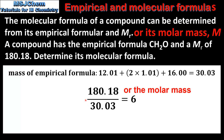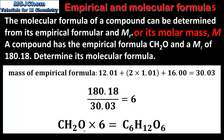So that's 180.18 divided by 30.03, and this gives us a value of 6. The final step is to multiply the empirical formula by 6, and this gives the molecular formula which is C6H12O6.